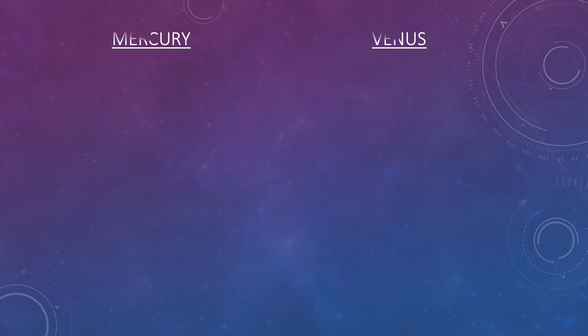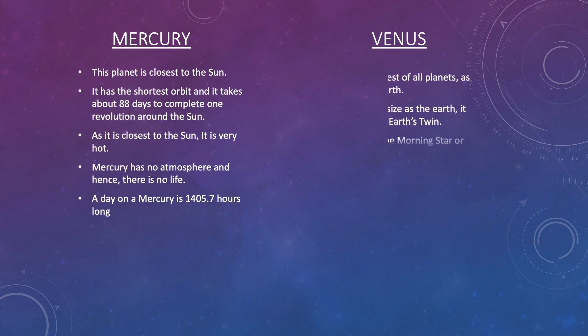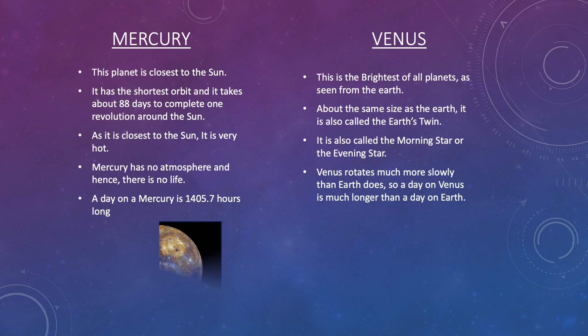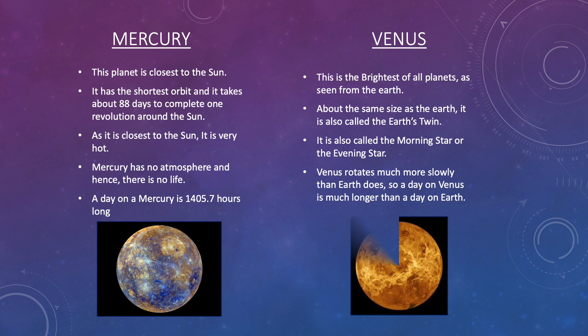Let's talk about all 8 planets in detail. Mercury is the planet closest to the Sun. It has the shortest orbit and it takes about 88 days to complete one revolution around the Sun. As it is closest to the Sun, it is very hot. Mercury has no atmosphere and hence there is no life. A day on Mercury is 1,405.7 hours long — imagine, our day is only 24 hours long.